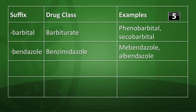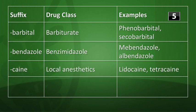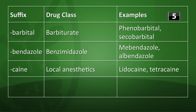Drugs ending in -barbital are barbiturates like phenobarbital and secobarbital. The suffix -bendazole refers to anti-parasitic drugs like mebendazole or albendazole, used for helminth (worm) infections. The suffix -caine refers to local anesthetics like lidocaine and tetracaine. The suffix -chol indicates a cholinergic or muscarinic agonist like bethanechol or carbachol.